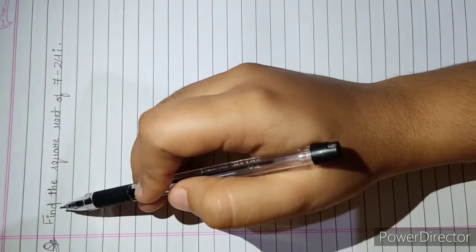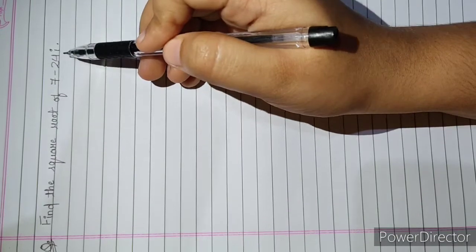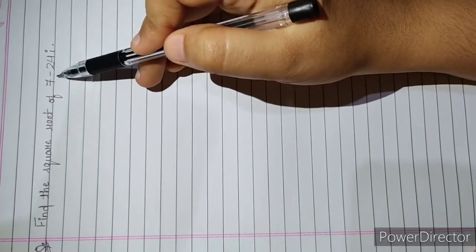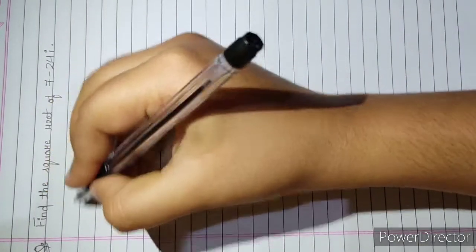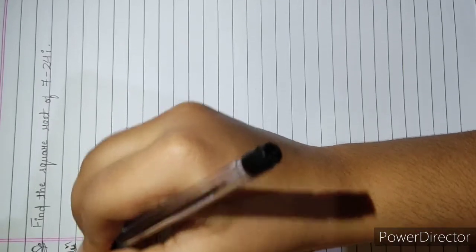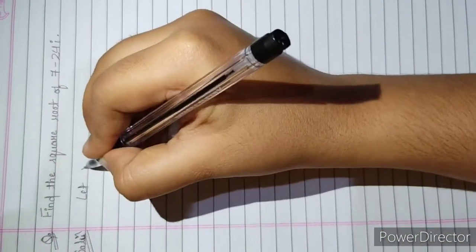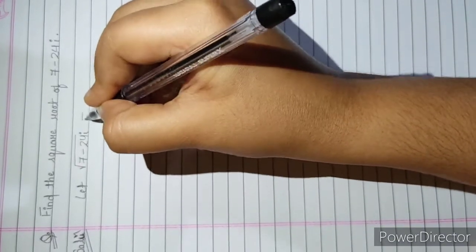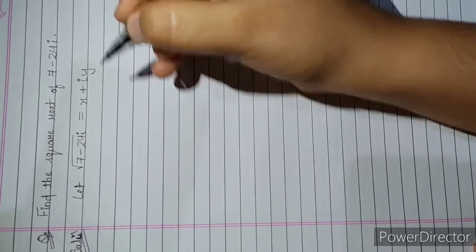In this question, we have to find out the square root of 7 minus 24i. This is a complex number, so let us take the square root of 7 minus 24i as x plus iy.